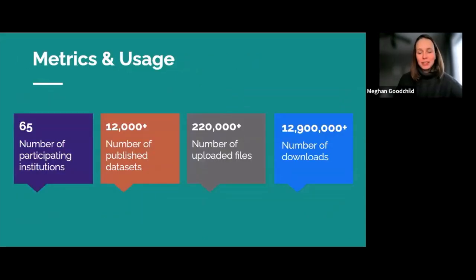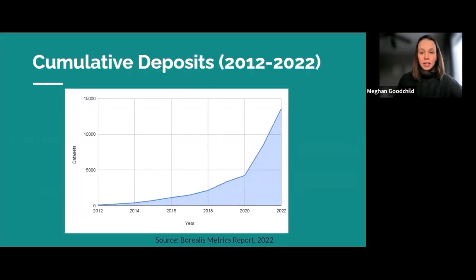In terms of usage, Borealis has 65 participating institutions using the repository service for their RDM data deposit and sharing services. There are over 12,000 published datasets and over 220,000 files uploaded, and now over 12 million downloads. We've seen a sharp increase in the number of deposits in the last three to four years. This chart shows the cumulative number of deposits over the past 10 years since its launch in 2012, which is very exciting.